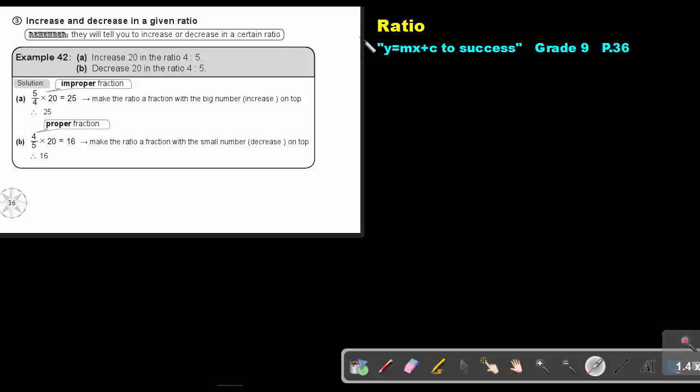Part 30. We are going to continue with ratio. You will find this on page 36 in the Namibia Mathematics Grade 9 textbook, Y equals MX plus C to success.